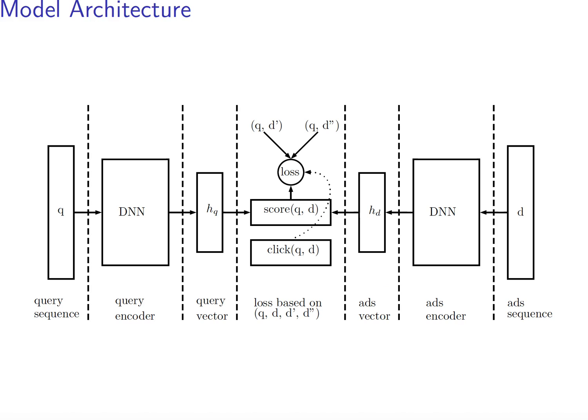Here is the overview of the architecture we used. On the left side, there's a query sequence, and on the right side, there's the ad sequence. We then have two encoders to encode the two sequences into two vectors. We then have a loss function in the middle to conduct learning.